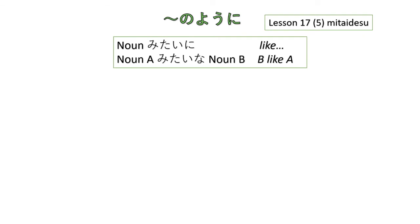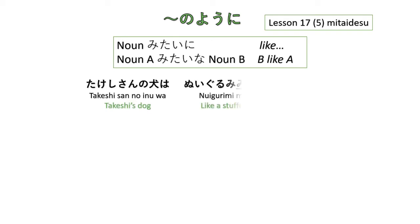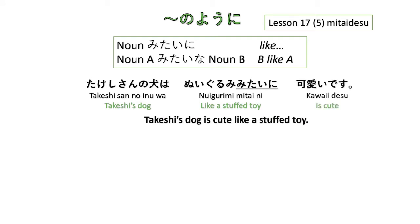We can also use みたい (mitai) instead of のように. We learned this in lesson 17, part 5. For example: Takeshi-san no inu wa nuigurumi mitai ni kawaii desu — Takeshi's dog is cute like a stuffed toy. Here nuigurumi mitai ni is used instead of のように, and this is acceptable.